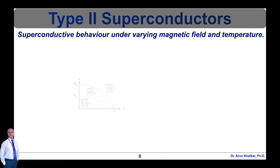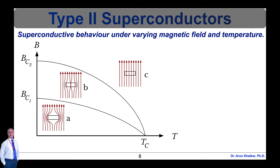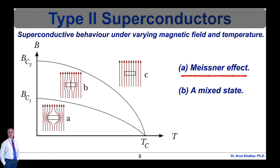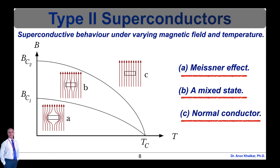Superconductive behavior under varying magnetic field and temperature is shown in this graph. The graph shows magnetic flux B as a function of absolute temperature T. Critical magnetic flux densities BC1 and BC2 and the critical temperature TC are labeled. In the lower region of this graph, both type 1 and type 2 superconductors display the Meissner effect (region A), and the mixed state (region B), in which some field lines are captured in magnetic field vortices, occurs only in type 2 superconductors. Beyond this region, the superconductivity property breaks down and the material behaves as a normal conductor, labeled C.